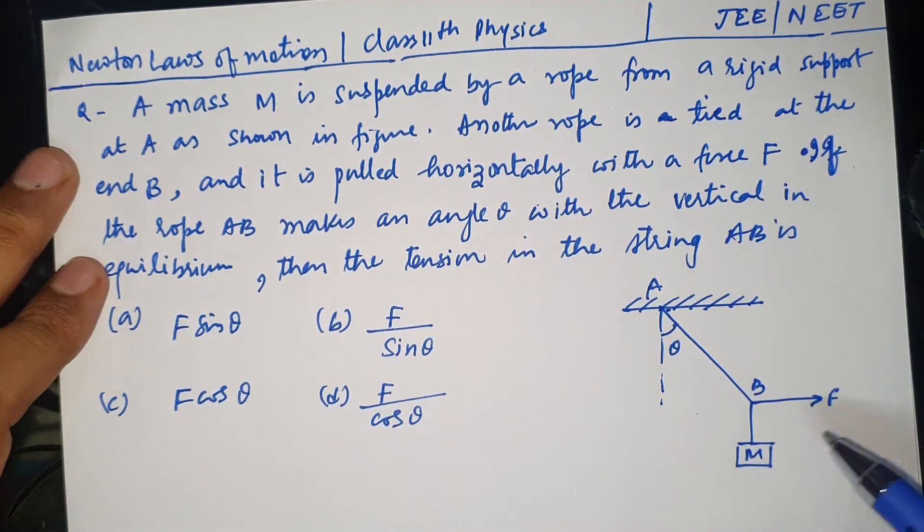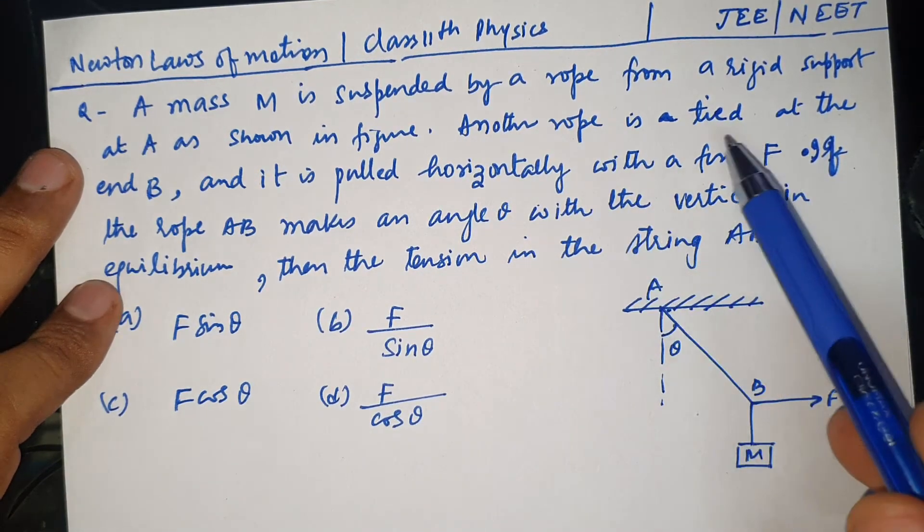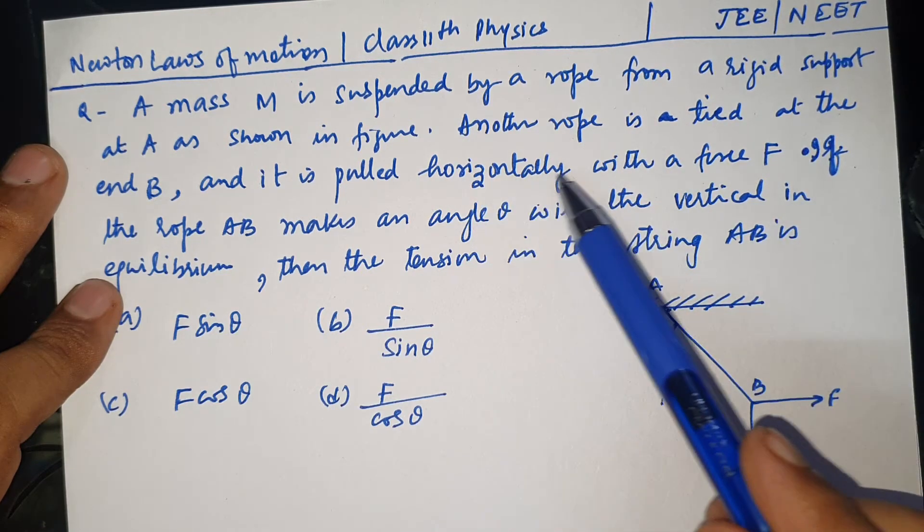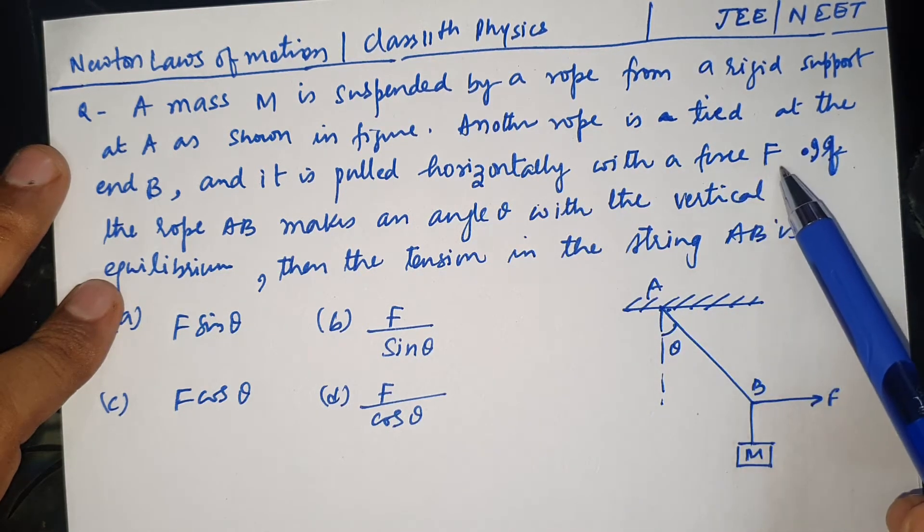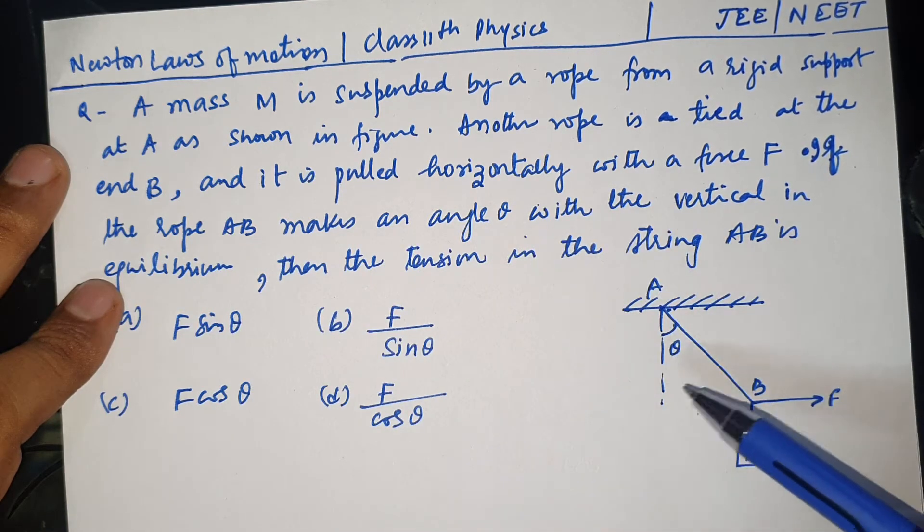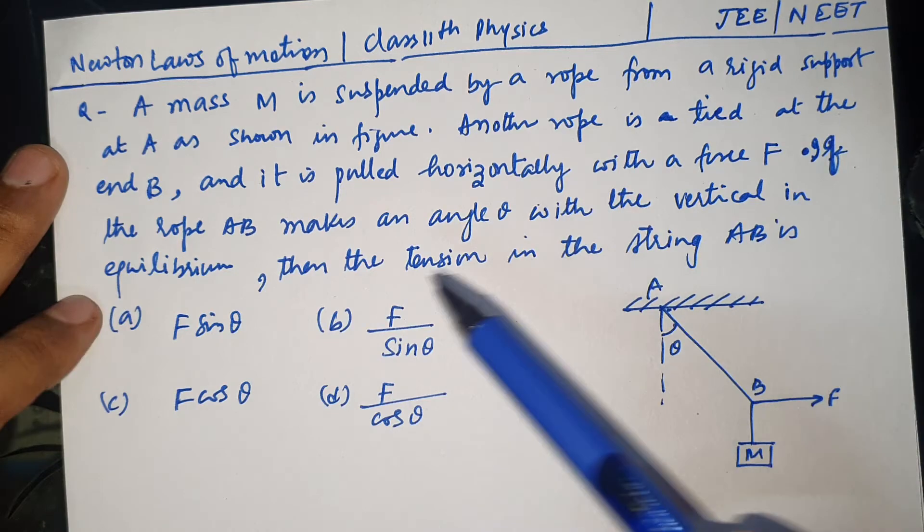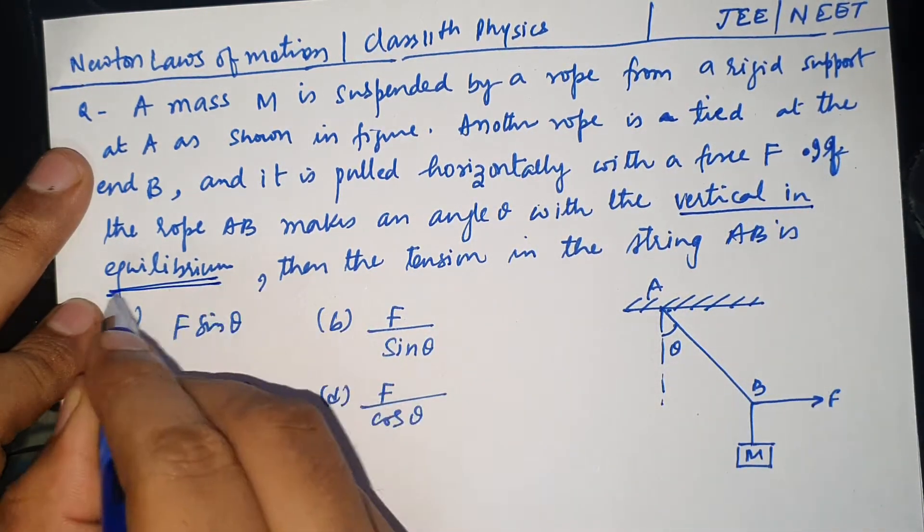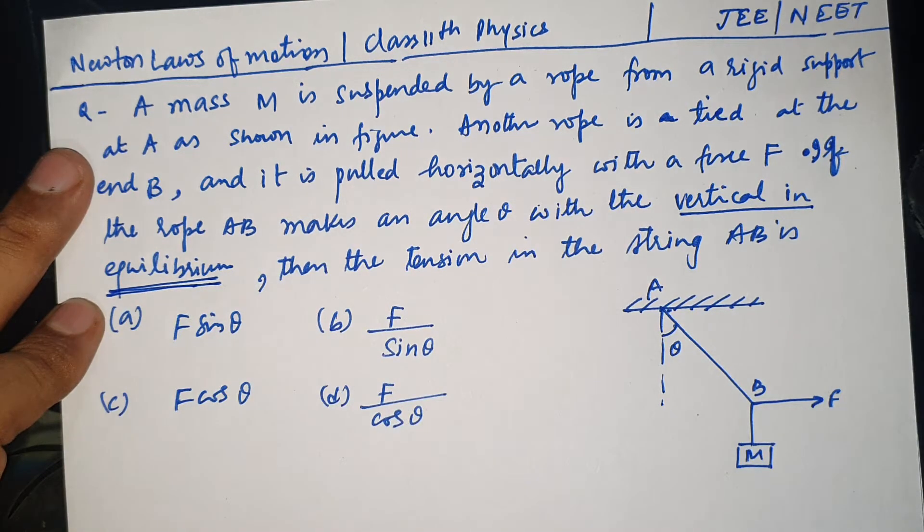As shown in figure, another rope is tied at the end B and it is pulled horizontally with a force F. If the rope AB makes an angle theta with the vertical in equilibrium - important, equilibrium - that means net force on the system is zero. Find the tension in string AB.